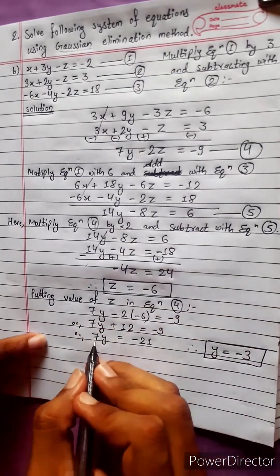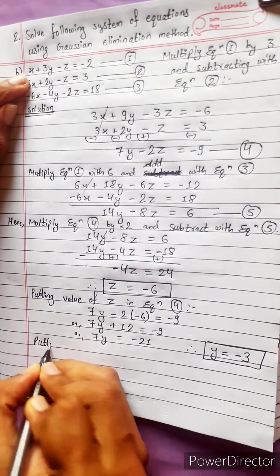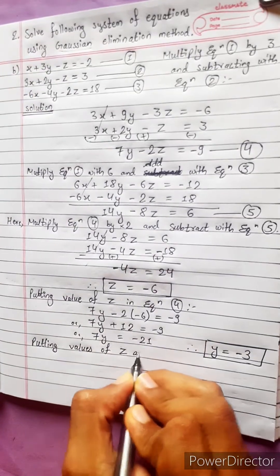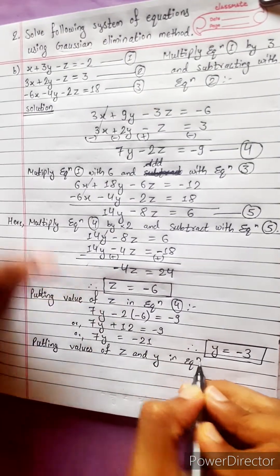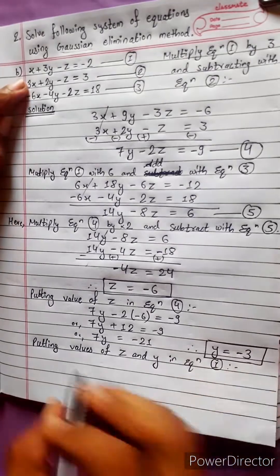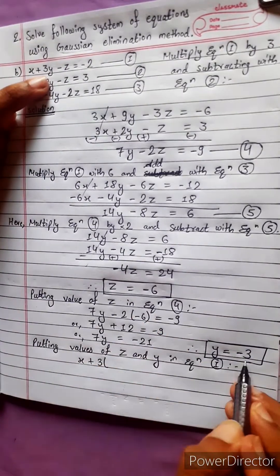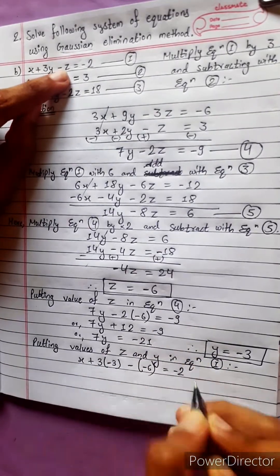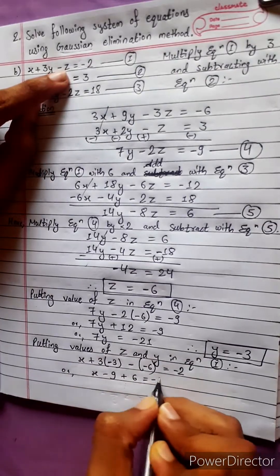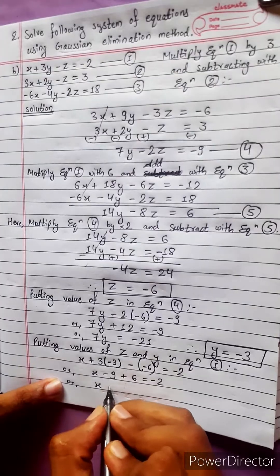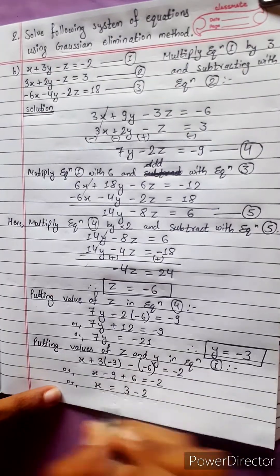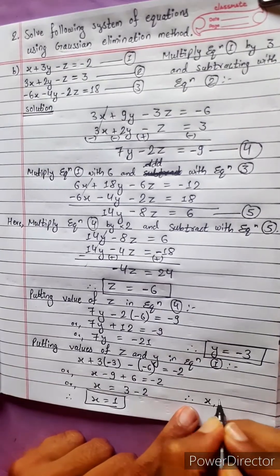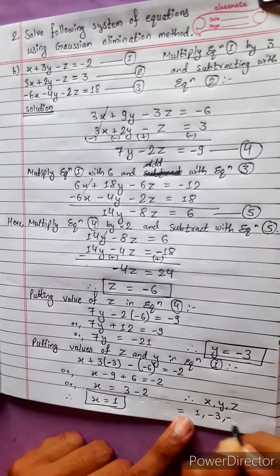Now putting the values of y and z into equation 1: x plus 3 times negative 3 minus negative 6 equals negative 2, so x minus 9 plus 6 equals negative 2, giving x plus negative 3 equals negative 2, therefore x equals 1. The solution is x equals 1, y equals negative 3, z equals negative 6.